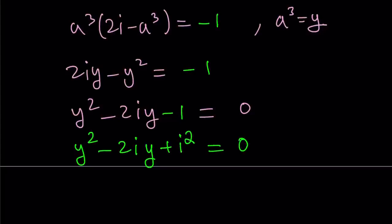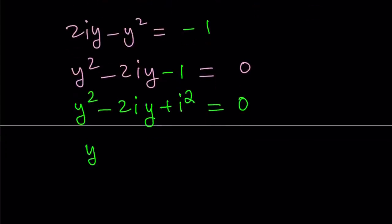So I'm going to replace -1 with i². And now this becomes a complete square, isn't that cool? We can write it as (y - i)² equals 0, and from here, y equals i. Nice!